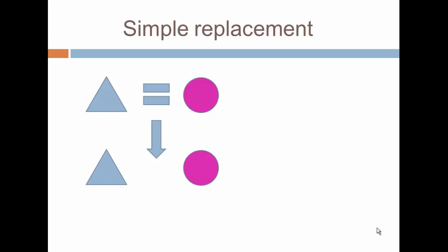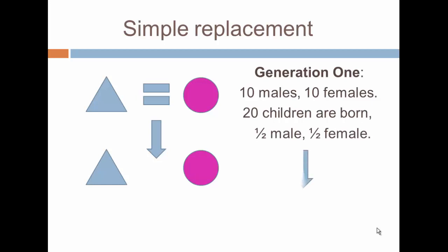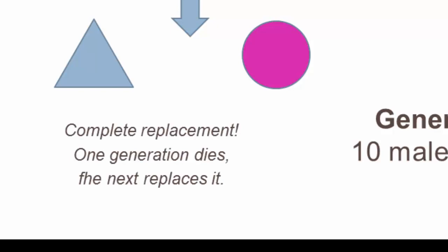In simple replacement there is no population growth. In generation one we have 10 males and 10 females. A total of 20 children are born, so each female averages two children who survived to adulthood — half are male, half are female — and this means the next generation looks just like the one above it. In our model we'll assume complete replacement, meaning as one generation reaches adulthood the prior generation dies, so all we have to do to calculate growth is calculate fertility.